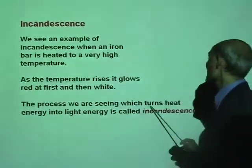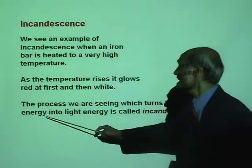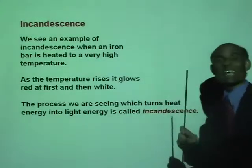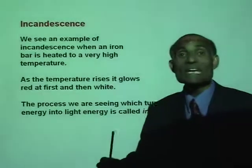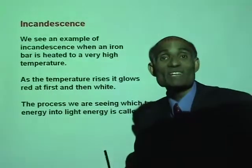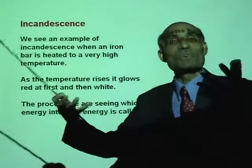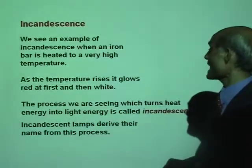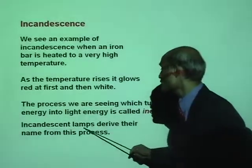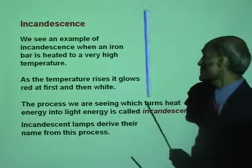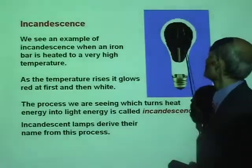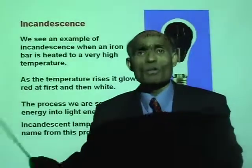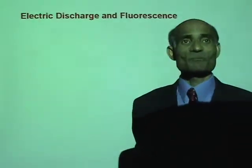The process we are seeing which turns heat energy into light energy is called incandescence. When you heat an object, that heat energy is turned into light energy, and that is what we call incandescence. Incandescent lamps derive their name from there — this is an incandescent lamp.